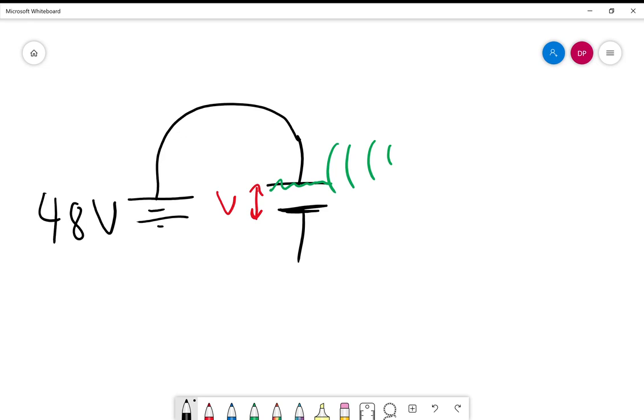I have another kind with me. Just give me one second while I change some levels. Hello. Okay, so this is a dynamic microphone. I'm trying to get it about the same volume level as the condenser mic.